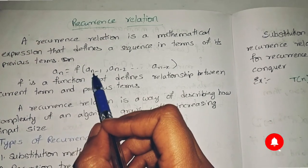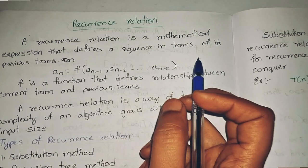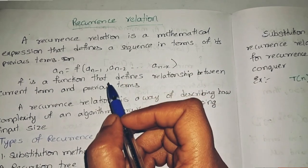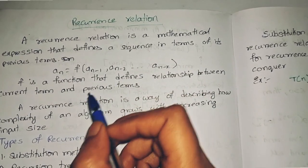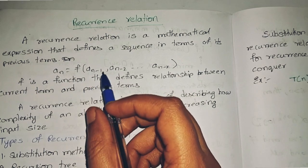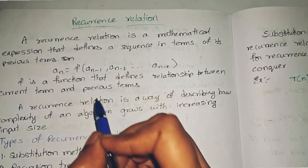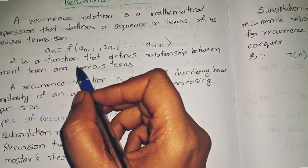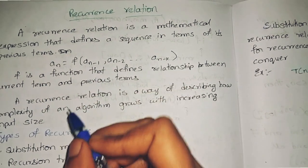It is a mathematical expression which defines a sequence of terms in terms of the previous terms. For example, Fibonacci series, factorial, and Towers of Hanoi problem are examples of recurrence relations.